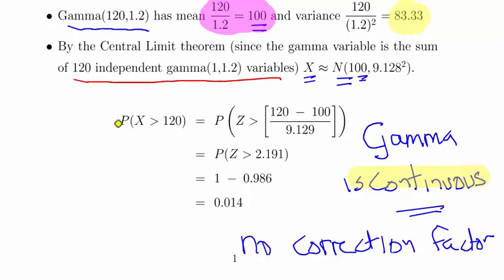Get the z-score: 120 minus 100 over 9.129. We get a z-score there of 2.191.